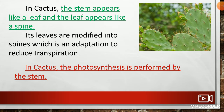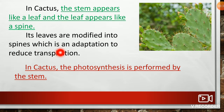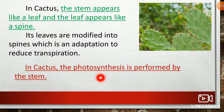Let us consider the cactus. In cactus, the stem appears like a leaf and the leaf appears like a spine. Its leaves are modified into spines, which is an adaptation to reduce transpiration. In cactus, the photosynthesis process is performed by the stem.